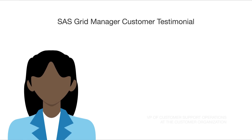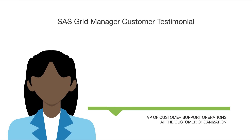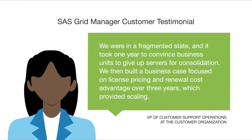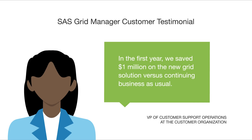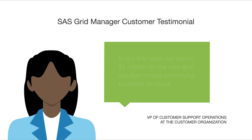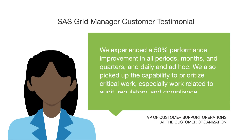The VP of customer support operations at the customer organization said: 'We were in a fragmented state, and it took one year to convince business units to give up servers for consolidation. We then built a business case focused on license pricing and renewal cost advantage over three years, which provided scaling. In the first year, we saved $1 million on the new grid solution versus continuing business as usual, while we experienced a 50% performance improvement in all periods.'